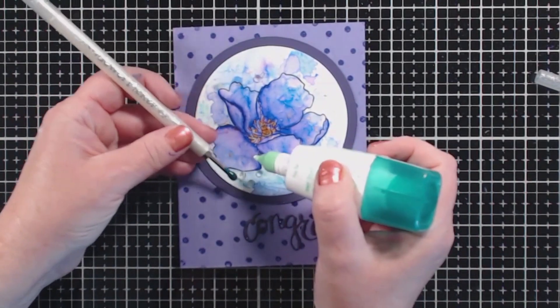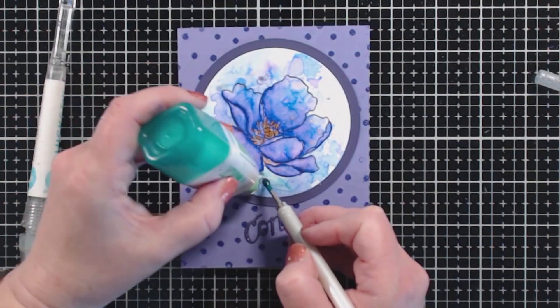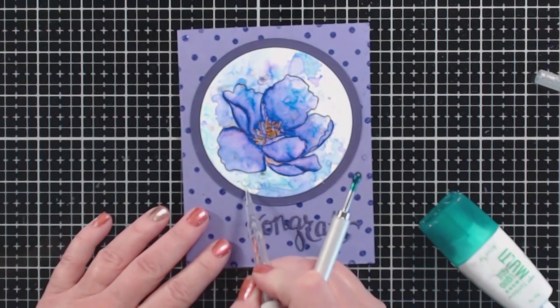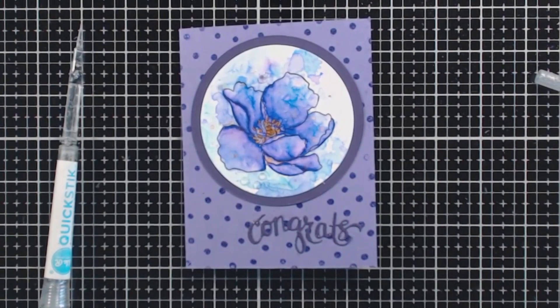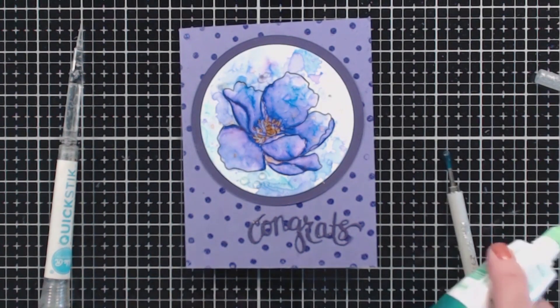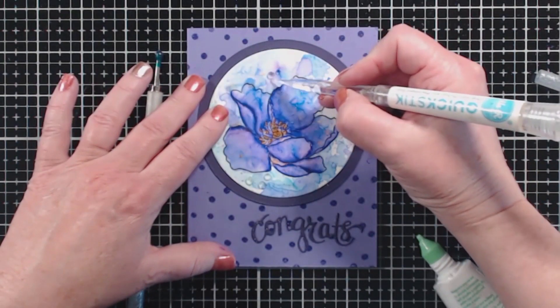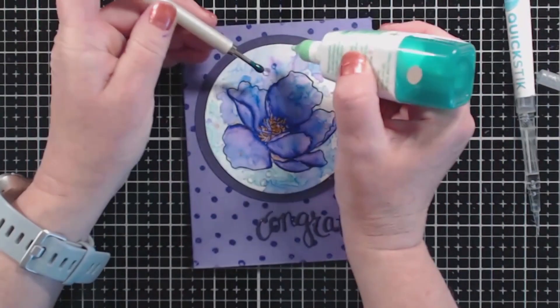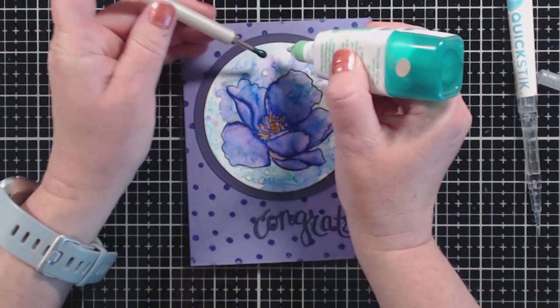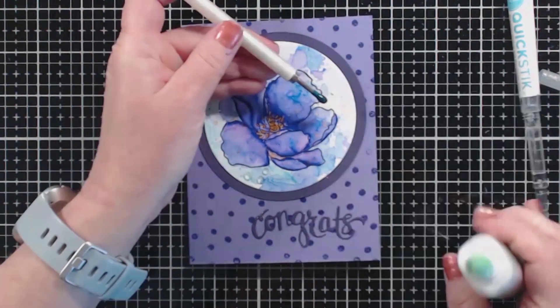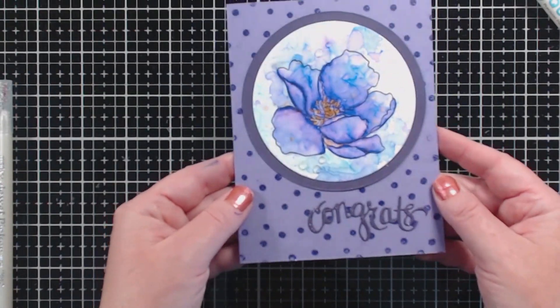I've decided to leave the Sympathy card as is, but with the Congrats card, I want to add a little bit of bling. Here I am adding some Studio Katia Sparkling Crystals using Tombow Mono Multi-Glue and my Jewel Picker. This is the last step in these cards. I really loved making these cards. I love working with watercolor medium. I love playing with different techniques, even if things don't work out in a way that I like. They're super fun to play with.